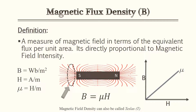The next term is magnetic flux density. Magnetic flux density measures a magnetic field in terms of equivalent flux per unit area. Think of it like raindrops falling from a cloud — every drop is the flux, but when you have many of them in one area it gets more dense. It is directly proportional to magnetic field intensity. The more flux lines in an area, the more strength — like waves at a beach pushing you. Magnetic flux density is also known as teslas in some textbooks.